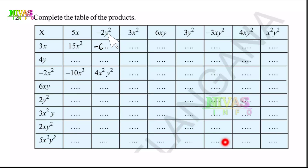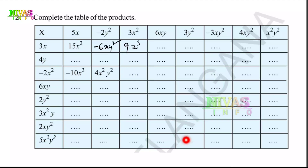Next, X into Y squared gives XY squared. The result is minus 6XY squared. Then 3X into 3X squared: 3 into 3 is 9, and X into X squared is X cubed, so the answer is 9X³.